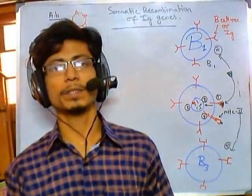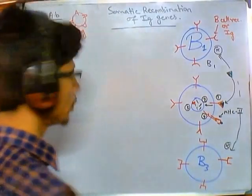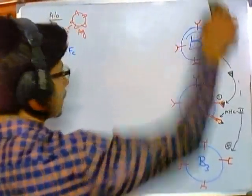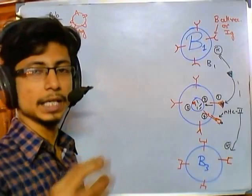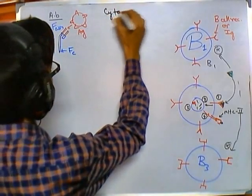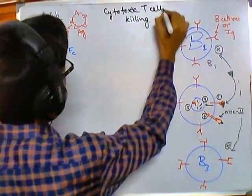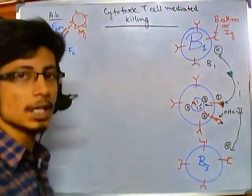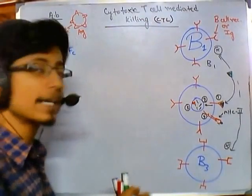Welcome back. In this video we will be talking about apoptosis mediated by cytotoxic killer cells. T-cells are of two different types: effector T-cells and helper T-cells. The effector T-cells are those cells which usually take the responsibility of killing the malfunctioning cells inside our body. We'll be talking about cytotoxic T-cell mediated killing — how cytotoxic T-cells (CTLs) kill the malfunctioning, bad, or infected cells in our body.